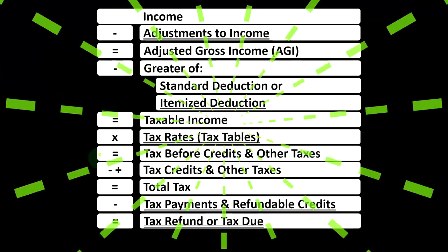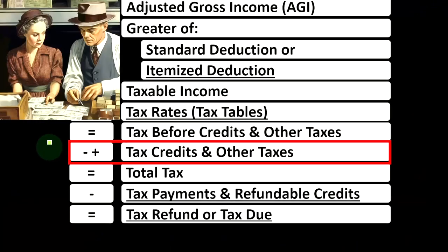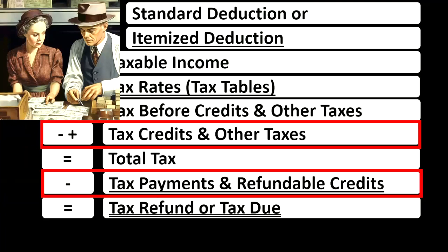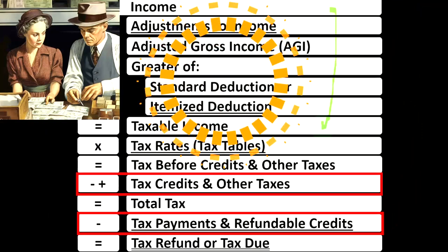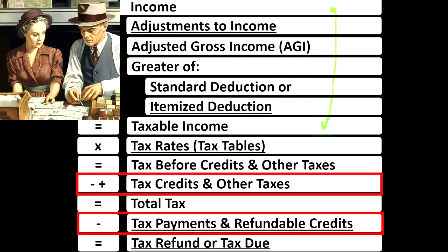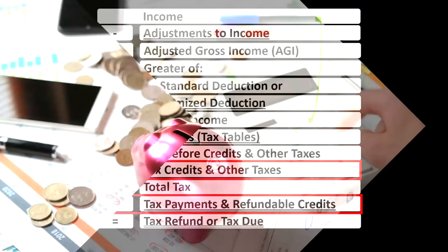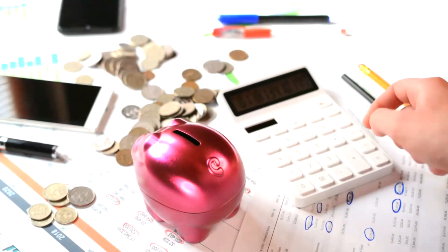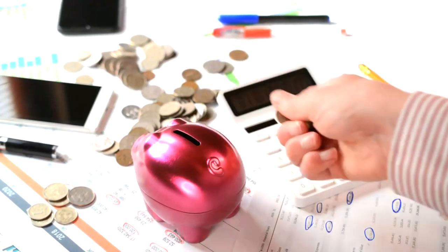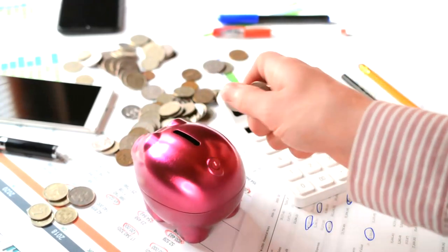Looking at the income tax formula, we're down here in the credit area. The first half of the income tax formula is, in essence, an income statement, although a strange one, where the bottom line is taxable income — similar to net income on a normal income statement. We then take taxable income to calculate the tax, not using one rate, but using the progressive tax system to get to the tax before credits and other taxes.